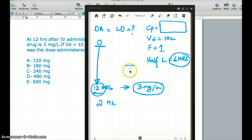Before one half-life, this 3 was actually 6 milligram per liter. And before that, we had 12 milligram per liter. So the CP is going to be 12 milligram per liter.